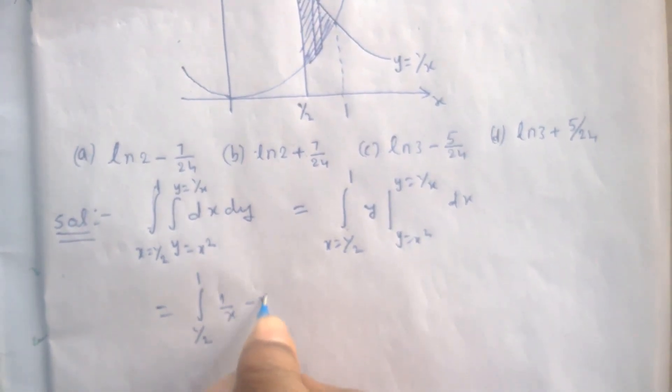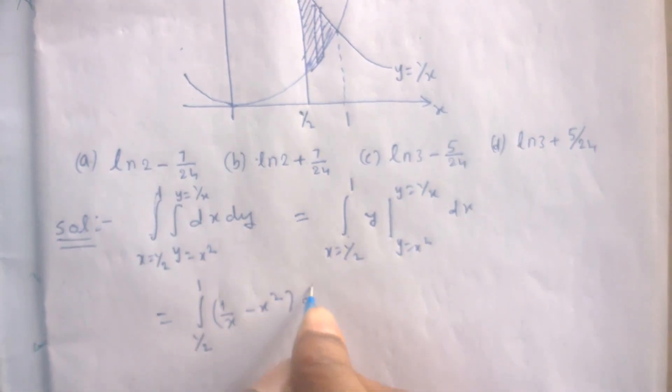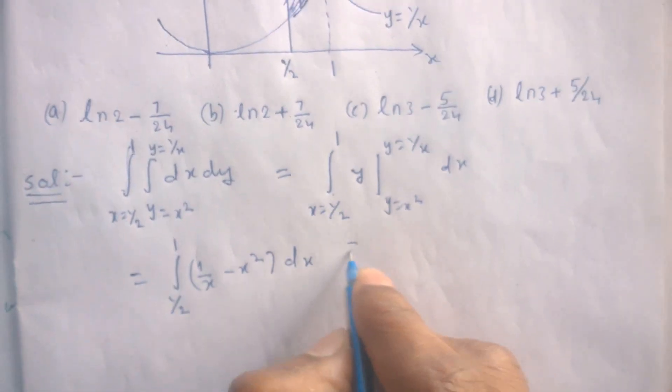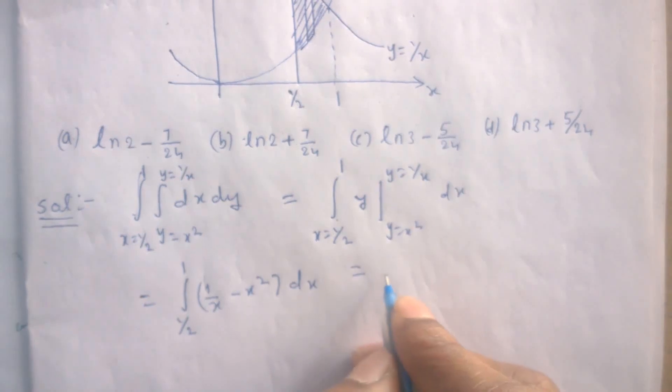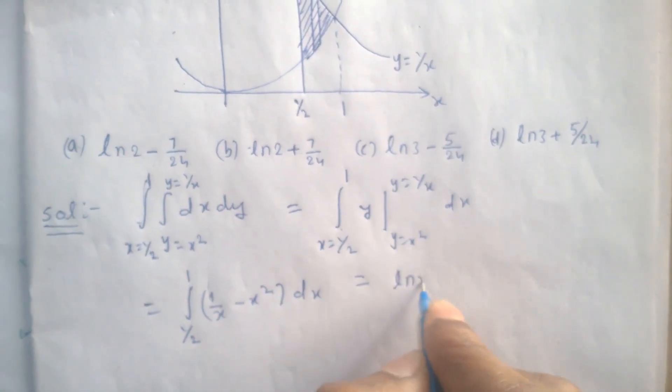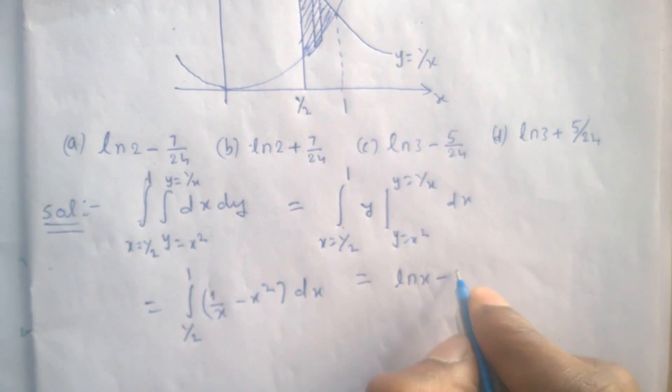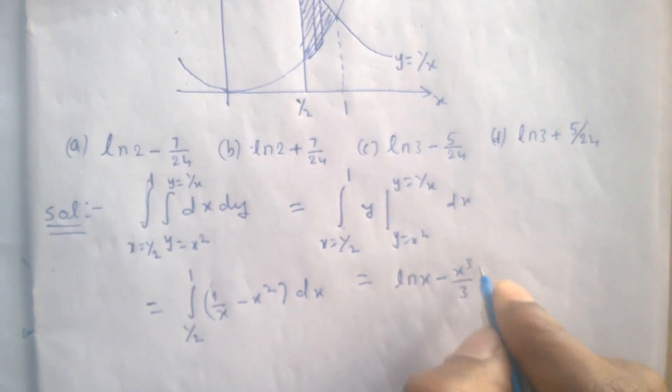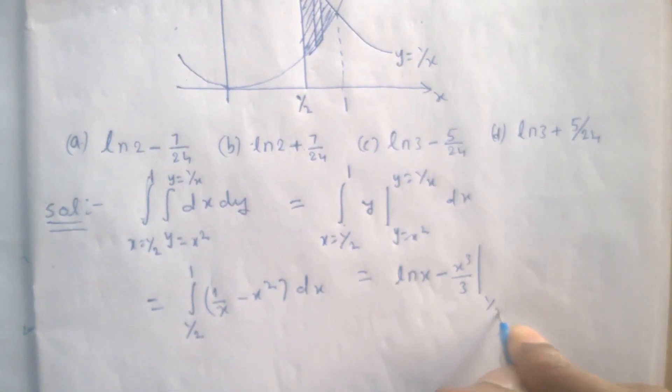1 by x integration we know is natural logarithm of x, minus x square integration is x cube by 3, and the limits are 1 by 2 to 1.